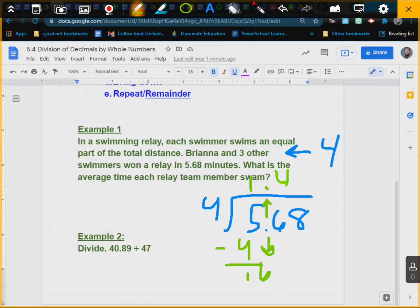4 goes into 16 four times. 16 minus 16 is 0. Bring down the 8. And 4 goes into 8 two times. And I know it goes in there evenly. 8 minus 8 is 0. There's nothing left over. So 1.42 is my final answer.